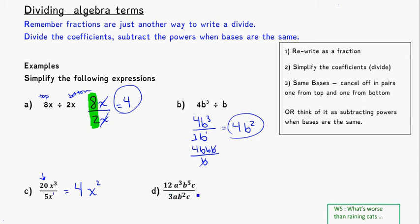Looking at the next problem, here I see lots of letters in there, lots of variables, but again let's break it down. First thing I'll deal with is the numbers in front. So what's 12 over 3, or 12 divided by 3? That is in fact 4 again.